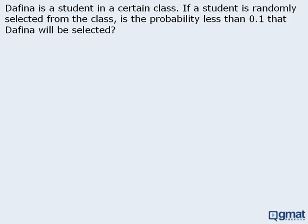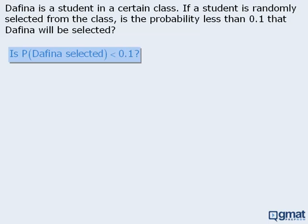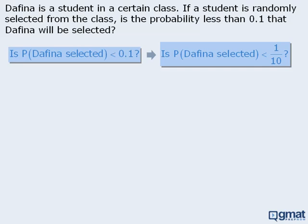In this example, Daphina is a student in a class. One student is selected from the class, and we want to determine whether the probability is less than 0.1 that Daphina is selected. We could write the target question as: is the probability less than 0.1, or equivalently less than one-tenth? Now what would need to happen for the probability to equal 0.1? There would need to be exactly 10 students in the class. So in order for the probability to be less than 0.1, there would need to be more than 10 students — another way to phrase the question is: is the class size greater than 10?